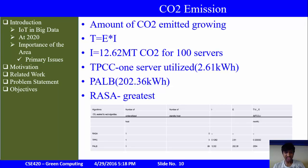In TPPC, just one server is utilized and others are shut down, so only 2.61 kWh is consumed by host number 1, and CO2 emission is calculated for only the underutilized server. In PALB, most servers are underutilized and others are on standby but not shut down, so 202.36 kWh is consumed by all 100 servers, and CO2 emission is calculated for all 100 hosts. RASA would have the greatest CO2 emission since all servers are operating at 100% utilization. Calibration of power consumption and CO2 emission in RASA can be addressed in future work. TPPC is more efficient at reducing CO2 because unused servers are shut down, though its implementation cost is greater than PALB.